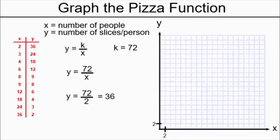Our table of values is going to look like this. I'm going fast, but I have plugged x equals 2, 3, 4, 6, 8, 9, 12, 18, 24, and 36 into my pizza function, and I am dividing 72 by each of those numbers in order to get the y coordinates that go with the x coordinates. And now I can start graphing.